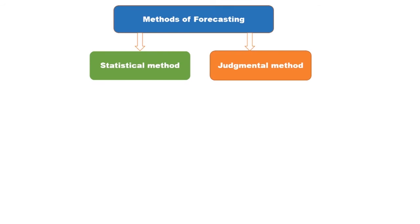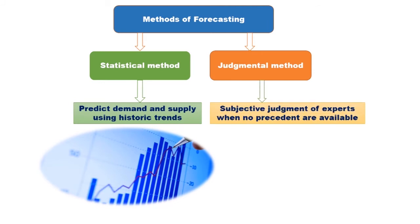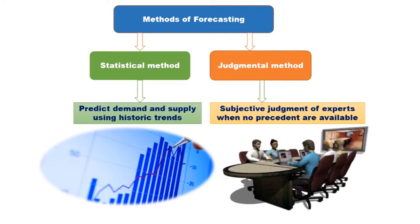Statistical methods capture historic trends in a company's demand for labour. Under the right conditions, these methods predict demand and supply more precisely than a human forecaster can using subjective judgment. But many important events in the labour markets have no precedent, and when such events occur, statistical methods are of little use. To prepare for these situations, the organisation must rely on the subjective judgments of experts, while pooling their best guesses is an important source of ideas about the future.